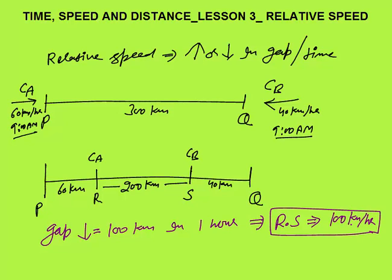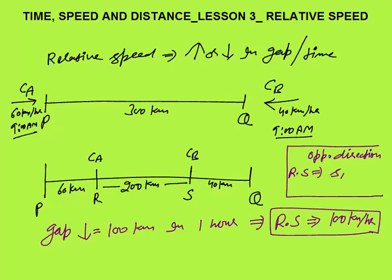That is the simplest meaning of relative speed. The gap earlier was 300, now the gap is 200, so the relative speed is 100 km per hour. Otherwise, you can simply remember: whenever two objects are moving in opposite directions, relative speed is always equal to the speed of object A plus the speed of object B. In this case, it will be 60 plus 40, that is 100 km per hour.